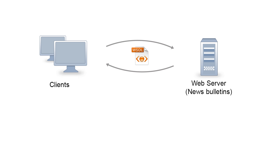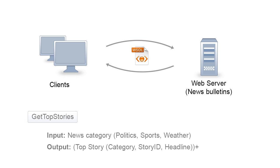As a practical exercise, we'll create a WSDL document from scratch to describe the format of the messages exchanged between a server that contains news bulletins and its clients. We are interested in getting a list of top stories as well as a particular story.